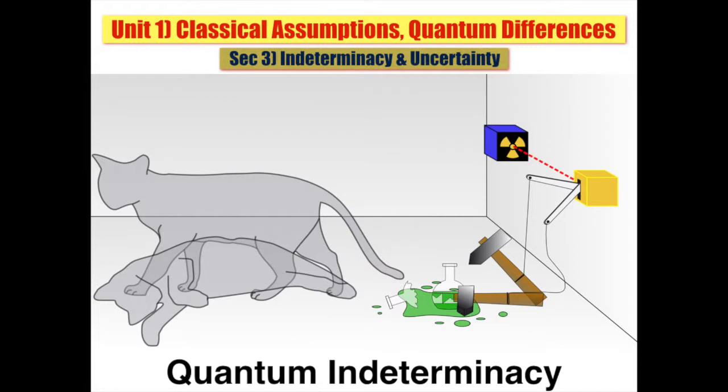Hodgson is careful to point out that indeterminacy of predictions on the microscale can produce similar indeterminacy on the macroscale. Indeed, when any measurement of an individual microevent is made, this is precisely what happens.